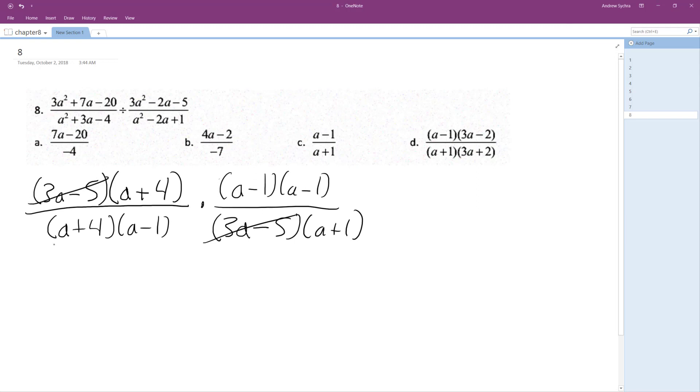So the 3a minus 5s cancel out, a minus 1s cancel out, and we're simply left with—oh, and the a plus 4s cancel out.